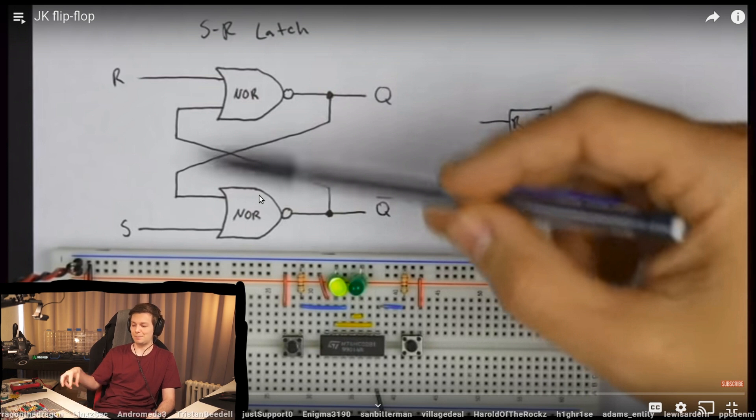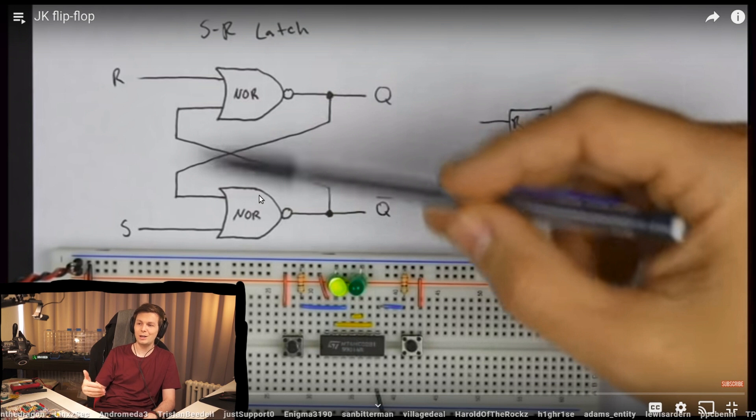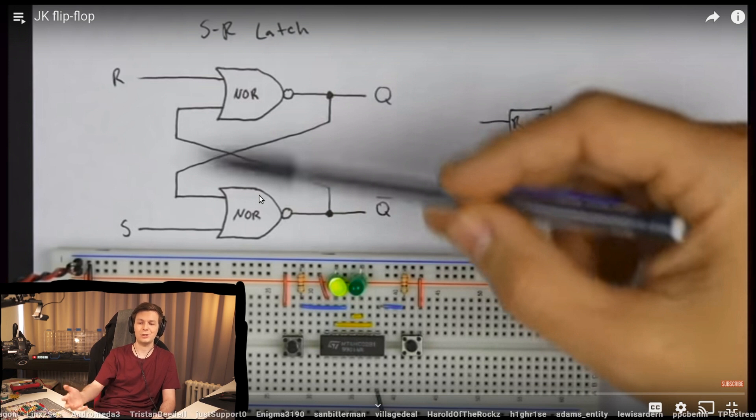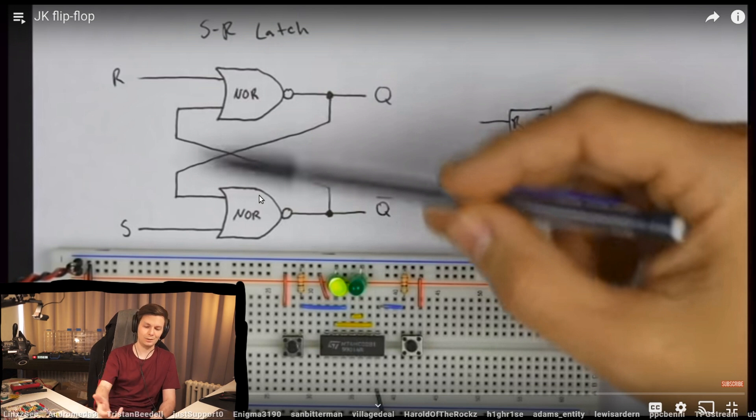And then based on that, you can build a bit more complicated up until you get like a D flip-flop. And now we go even a bit further. Now we introduce the JK flip-flop, which is another kind of variation or improvement or advancement or modification of this idea.